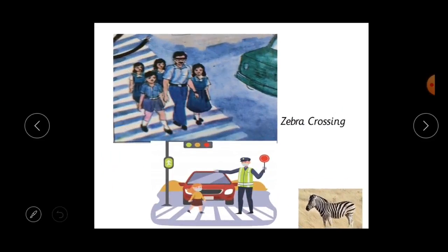So next, suppose you want to cross the road — how shall you cross the road? If you want to cross the road, we should cross the road at zebra crossing. We have to cross the road on zebra crossing. So what is the zebra crossing? Where is it? So this is called the zebra crossing. Can you see this?